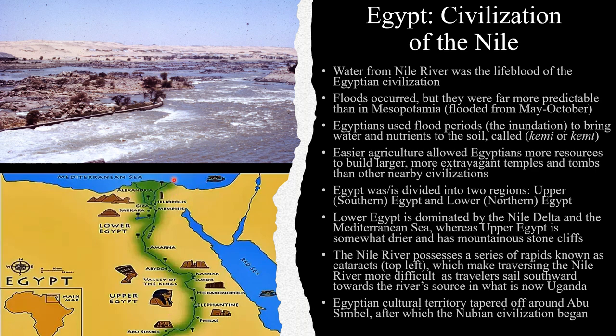Lower Egypt is dominated by the Nile Delta region, as the Nile River widens and dumps into the Mediterranean Sea. Upper Egypt is significantly drier and possesses stone cliffs close to the riverbanks. The Nile River also possesses a series of rapids called cataracts, seen here in the top left, which make traversing the Nile River more difficult as travelers sail southward upriver towards the source of the Nile River in what is now present-day Uganda. Egyptian cultural territory tapered off around Abu Simbel, after which the Nubian civilization began, although during the New Kingdom, at the height of ancient Egypt's power, the Egyptians expanded briefly south of Abu Simbel.